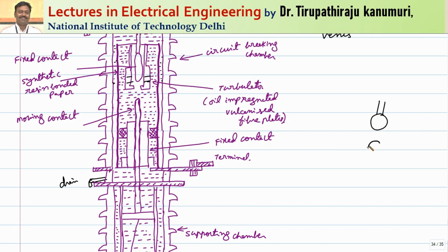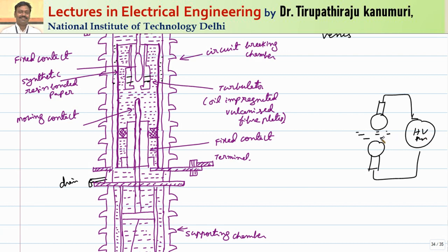Frequently we have to check the oil for dielectric strength using an oil tester. In the oil tester, two plates are connected to a high voltage supply with oil kept between them. The gap between the plates is maintained at 4 mm. For this 4 mm gap, the oil should be able to withstand 40 kV for one minute. If the oil can withstand 40 kV, the dielectric properties are proper; if not, the oil needs to be replaced.